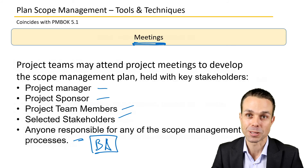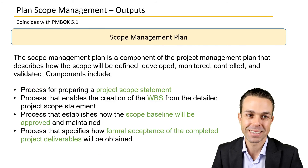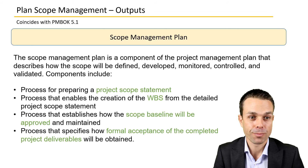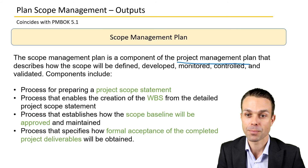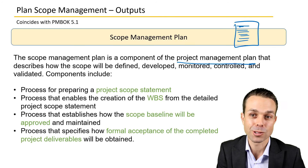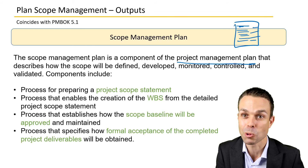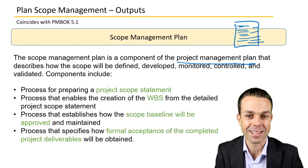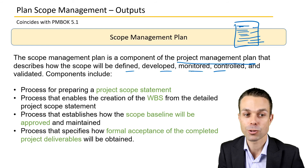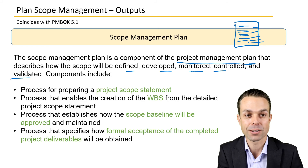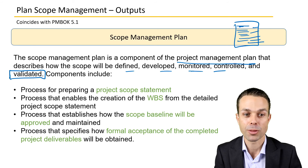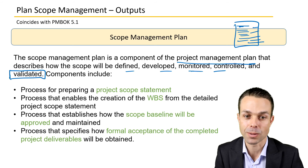There are two outputs from Planning Scope Management. The first is the scope management plan, which is a component of the project management plan — it sits alongside other pieces like risk, cost, schedule, quality, and procurement. It describes how the scope will be defined, developed, monitored, controlled, and validated to ensure the customer got what they wanted.